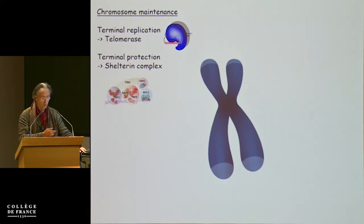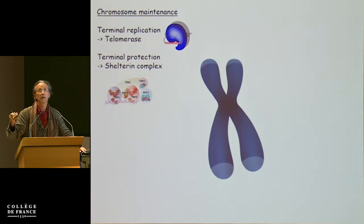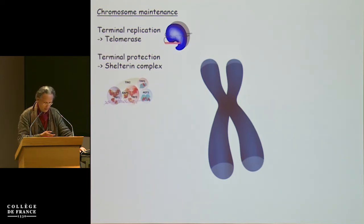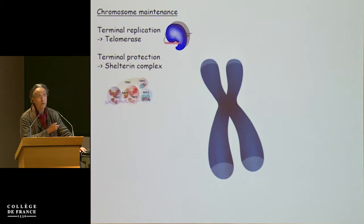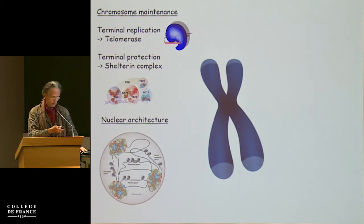This replication problem is solved in many cells — not all — by a well-known enzyme named telomerase, which is basically a specialized reverse transcriptase. The second problem is that the natural chromosome end or DNA extremity must not be recognized as an accidental double-strand break, otherwise this gives rise to very high instability in our karyotype because of recombination events. This function is provided by a distinct mechanism: a particular protein complex that caps and protects the end of our chromosomes.